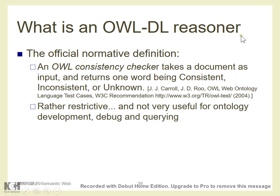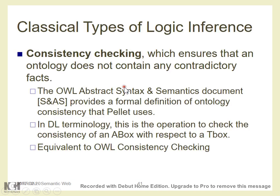From the technical point of view, the definition of a reasoner is quite limited. The OWL semantics working group document says: we need a tool that takes a document as input and returns one word — 'consistent,' 'inconsistent,' or 'unknown.' This would be the minimum capability of a tool we can use as a semantic reasoner. It seems very poor, but this is the minimum level we can do.